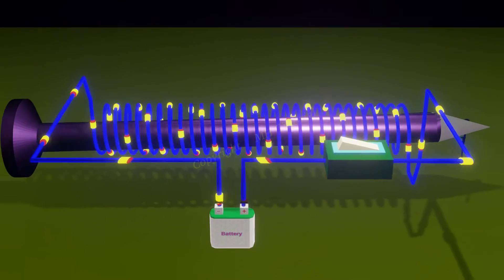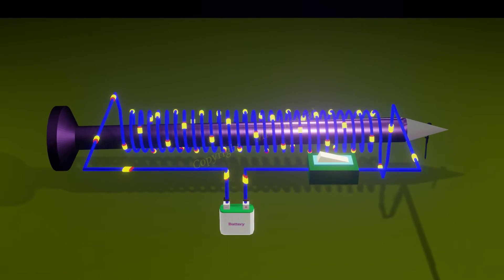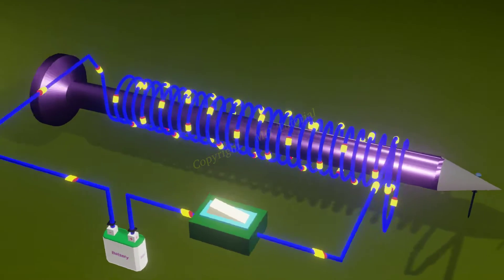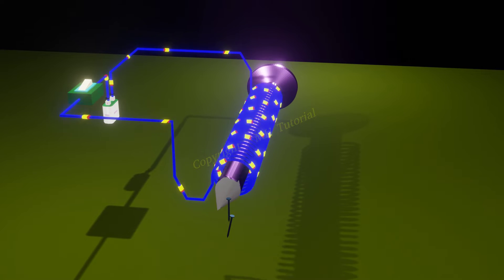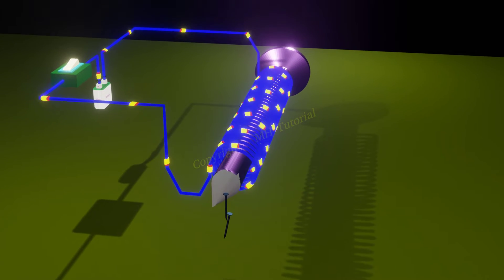Solenoid is also known as an electromagnet. When a steady current flows through it, it behaves like a magnet and attracts iron-like material to it.